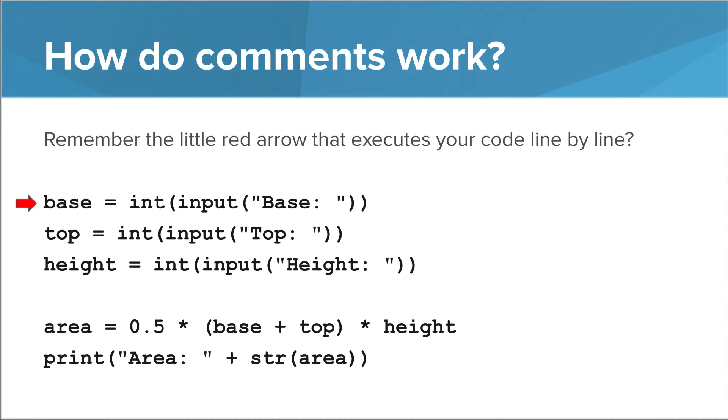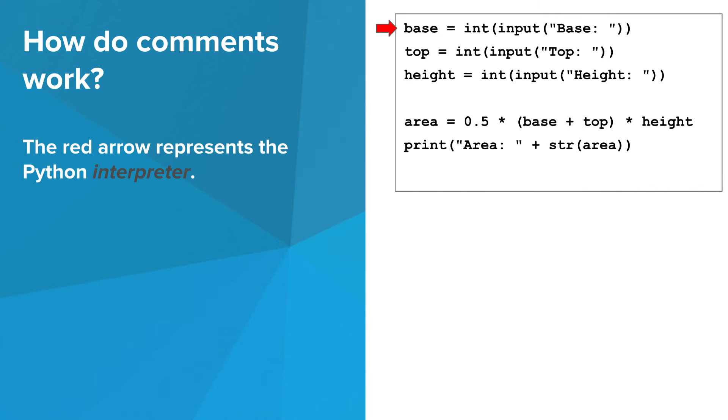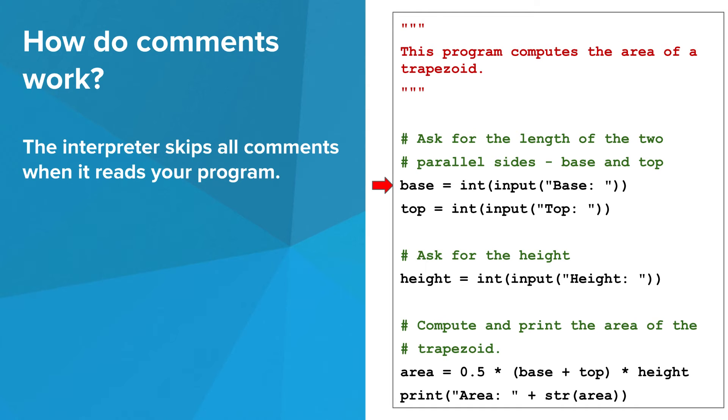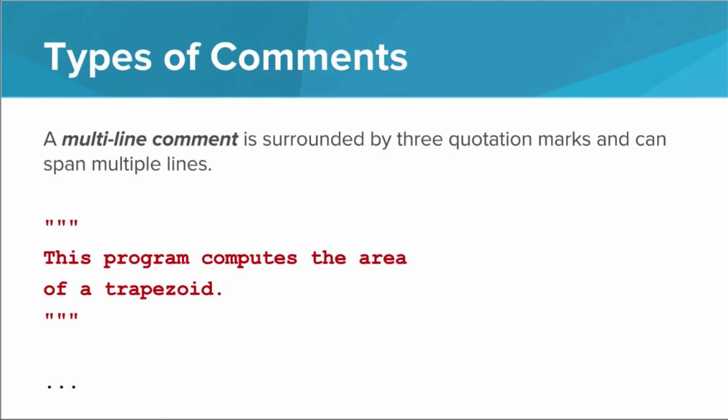First, let's talk about how comments work. In some of the videos for this course, you saw a magic little red arrow that executed your program one line at a time. The magic red arrow represents something I've mentioned a few times called the Python interpreter. When you write a Python program, there is another program called the interpreter that goes through your program line by line and executes it. Turns out the interpreter is pretty smart and can skip over anything that looks like a comment. So, how does it know what to skip? This brings us back to the two types of comments.